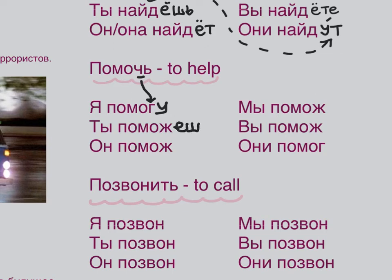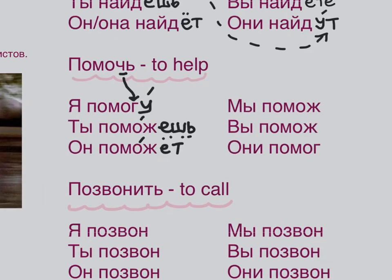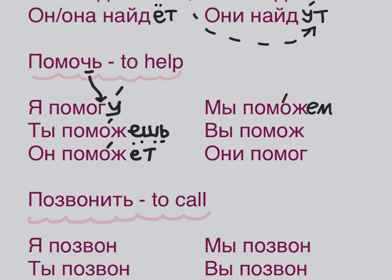ТЫ МНЕ ПОМОЖЕШЬ? Are you going to help me? ОН ПОМОЖЕТ. МЫ ПОМОЖЕМ. ВЫ ПОМОЖЕТЕ. ОНИ ПОМОГУТ. Я ПОМОГУ ТЕБЕ — I'll help you. А ТЫ МНЕ ПОМОЖЕШЬ? МЫ ПОМОЖЕМ ВАМ — statement. А ВЫ НАМ ПОМОЖЕТЕ? — the intonation goes up, clearly a question.